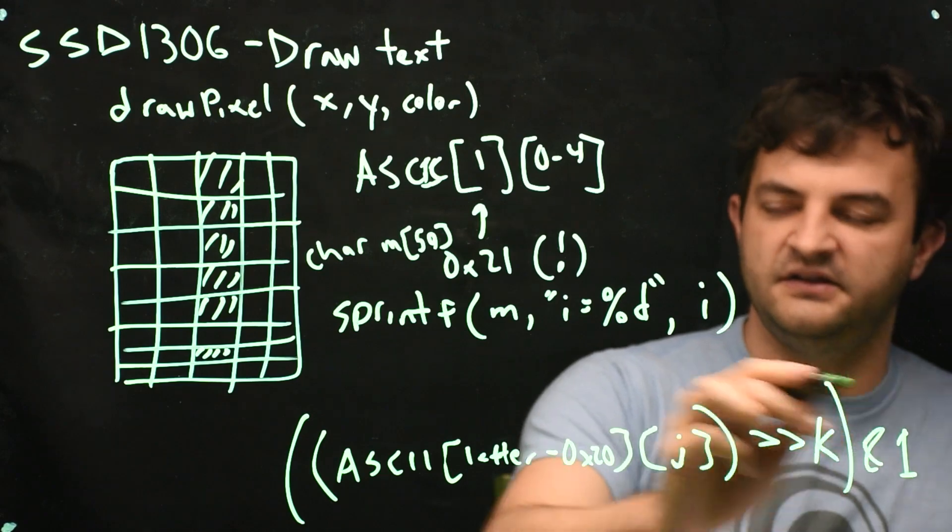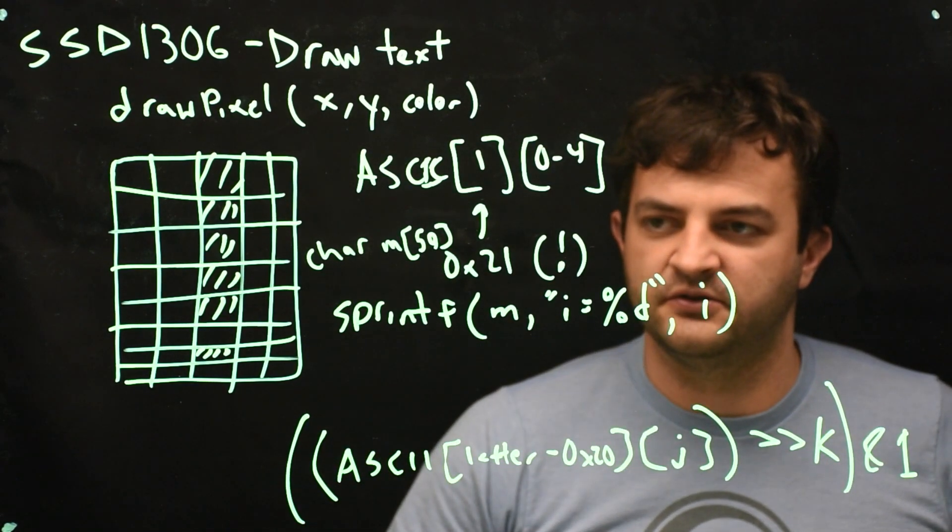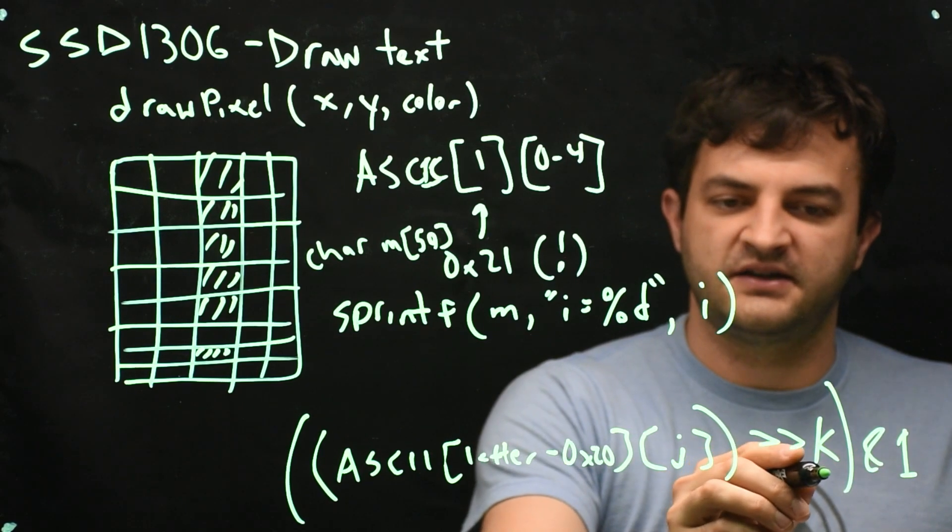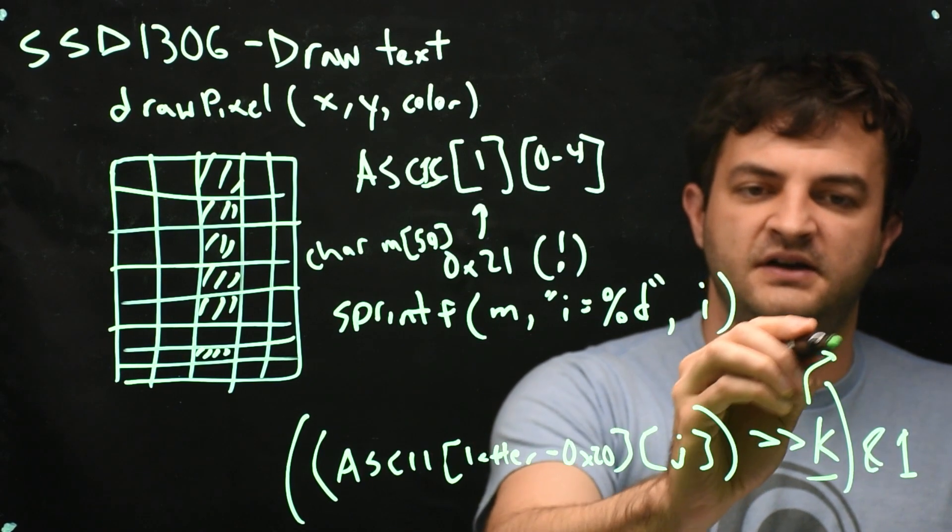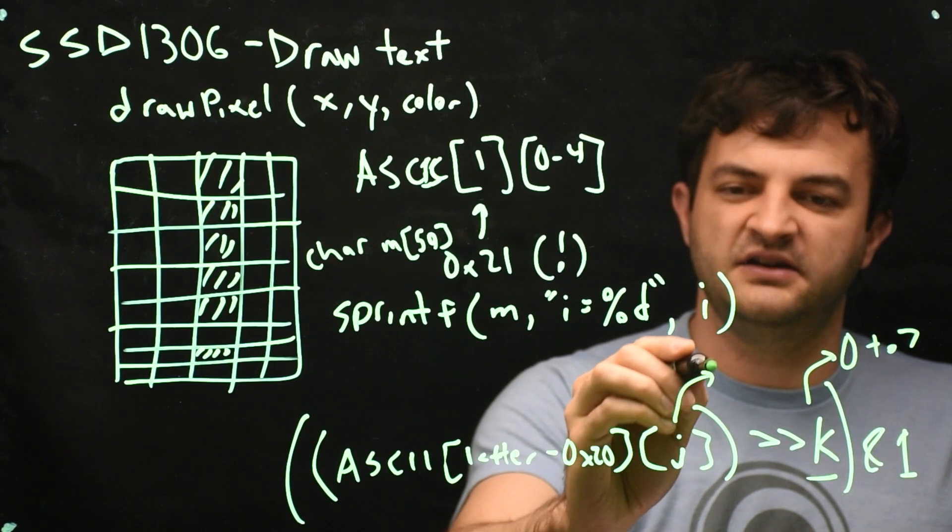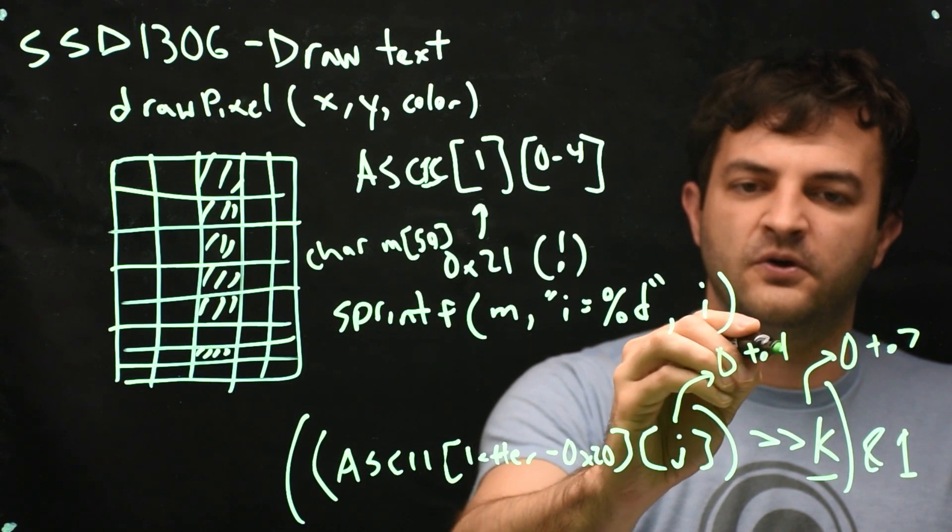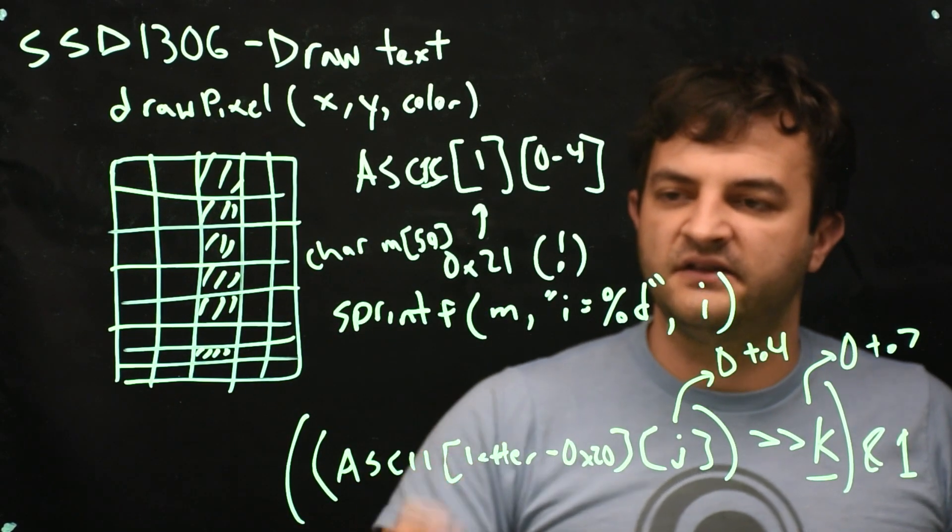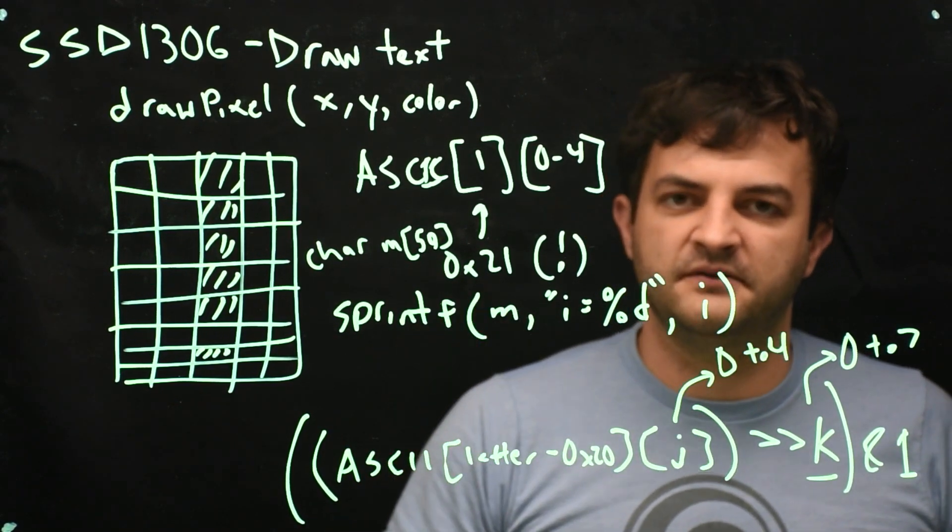So this is the innermost part of all of the loops that you'll be doing. So that means we're looping over k from 0 to 7. And we're looping over j from 0 to 4. That goes through each column. And then letter is going to be every part of m.